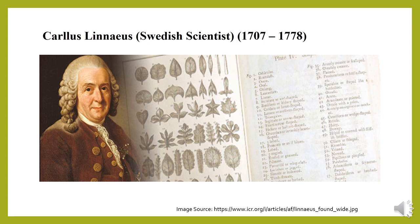In binomial nomenclature, the first word is the generic name, meaning genus, and the second is the species name, meaning specific name. Both names are written underlined or in italics. The generic name starts with a capital letter, while the species name starts with a small letter.